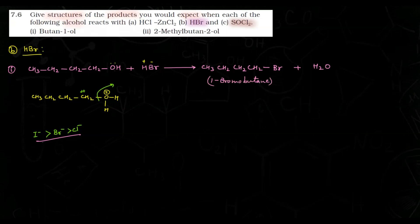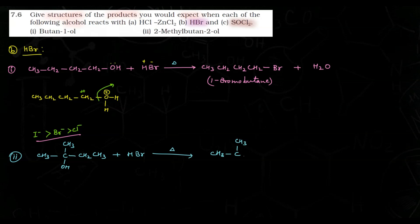Second part: 2-methylbutan-2-ol — structure CH3-C(CH3)(OH)-CH2-CH3. Reaction karwayenge HBr ke saath, saath mein thoda heat bhi karna hota hai. OH aur H bahar jaayenge as water, aur Br aayega us carbon par. Product milega: CH3-C(CH3)(Br)-CH2-CH3, jiska naam hai 2-bromo-2-methylbutane.